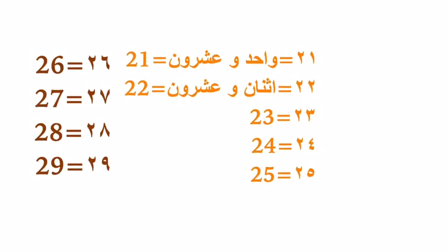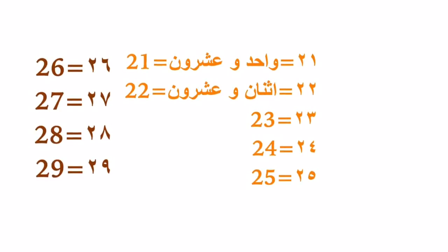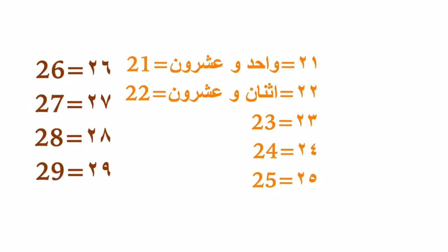Starting from twenty-one: واحد وعشرون. Twenty-two: إثنان وعشرون. You know the letter واو — it means 'and' — so we are basically saying 'one and twenty' or 'two and twenty' or 'three and twenty.'